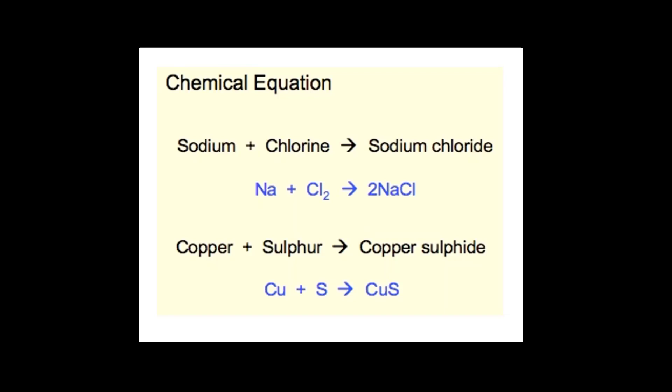Another example is copper plus sulfur. This reaction gives us the product copper sulfide: Cu plus S yields CuS.